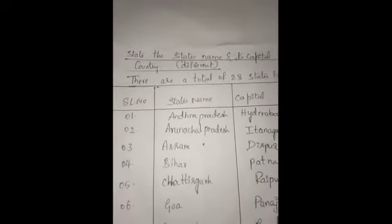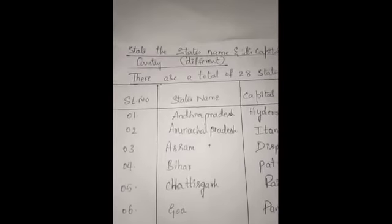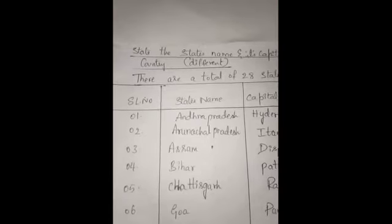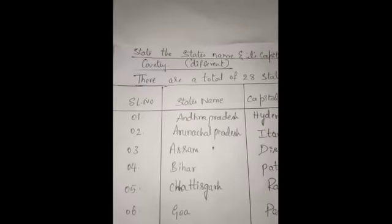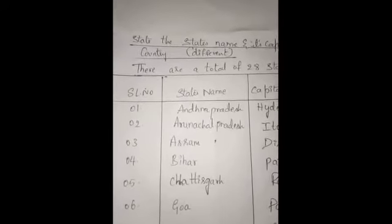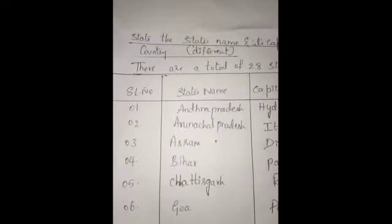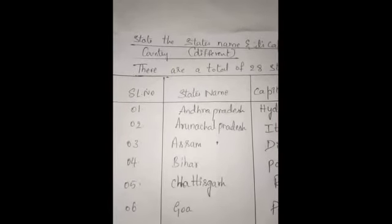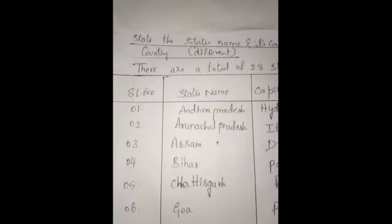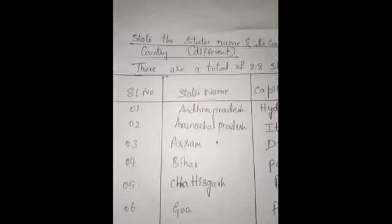Good morning dear students. In the previous class in social science we saw some general question answers, dictation, and terminologies. In today's class we are going to learn about our country's states and their capital names. There are totally 28 states in India, and we are going to learn all of their capitals.